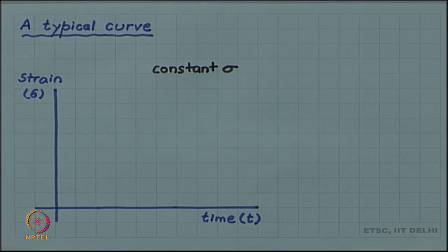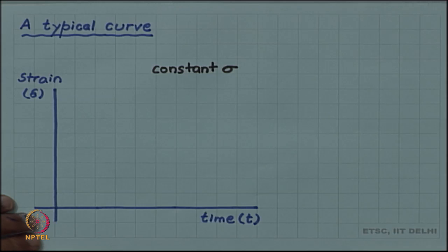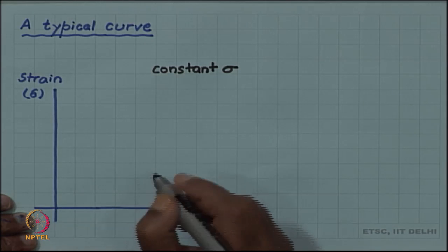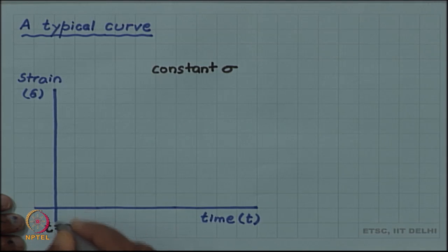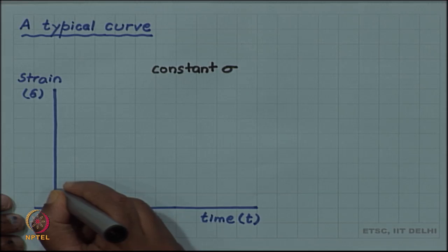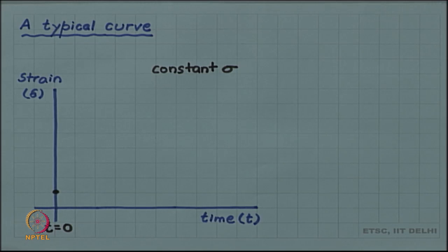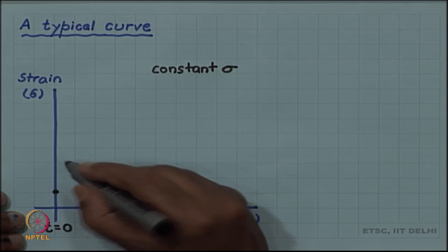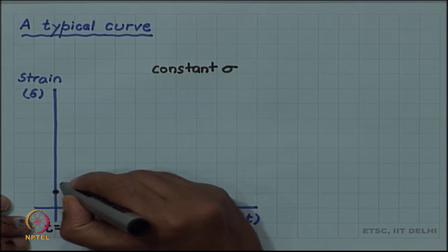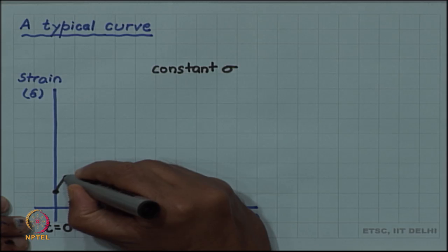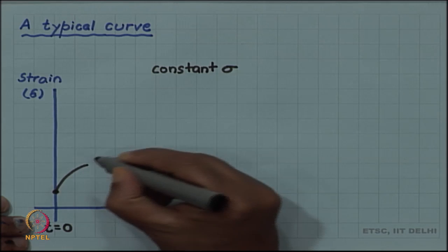If you plot strain as a function of time, you get what is called a creep curve. At time t equals 0, there will be some initial deformation as soon as the load is put on the material. After that, even though load is not being increased, as a function of time material starts to deform and so the strain builds up.